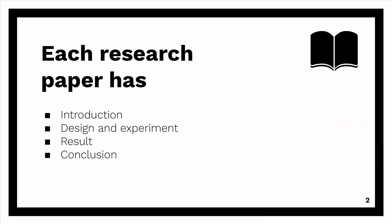Each research paper has four different parts: introduction, design and experiment, results, and conclusions. I'm going to explain each individual part and tell you what is going to be in each part. I'm going to use my previous research paper as an example.